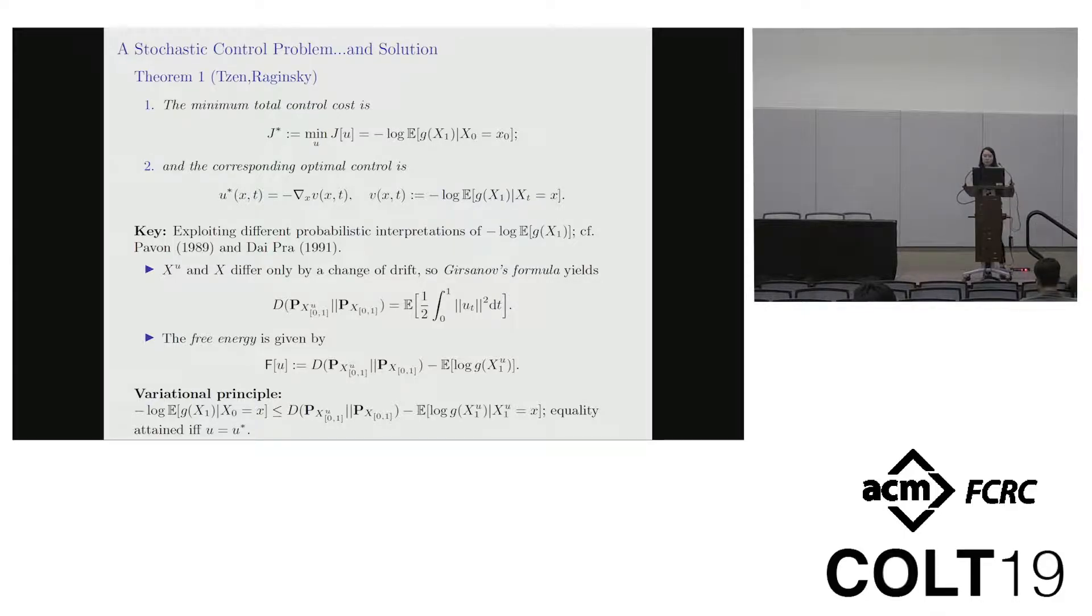For a sense of what this gives us, first notice that because the controlled and uncontrolled processes differ only by change of drift, Girsanov's theorem tells us that the divergence between their pathwise probability measures is exactly the control cost that you've expended. And this lets us define the free energy as follows, which in turn gives us the following variational principle, that the total cost using any admissible control is lower bounded by the terminal cost of the uncontrolled process and equality is obtained if and only if you use the optimal control.